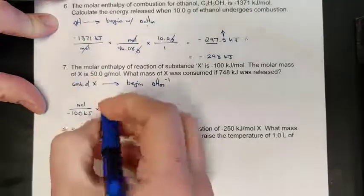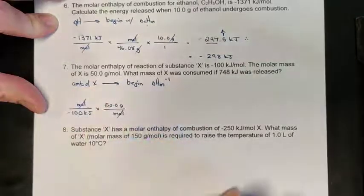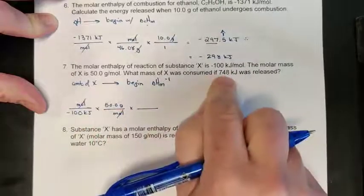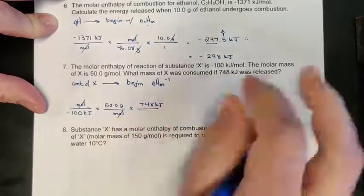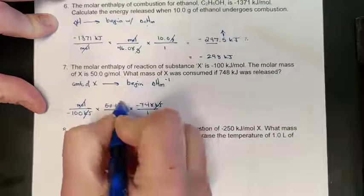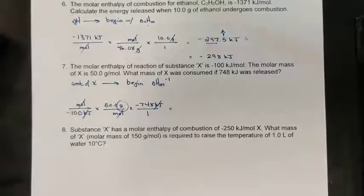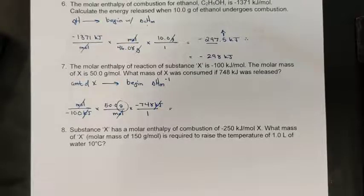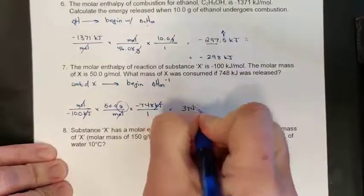Starting with the reciprocal: 1 mole per negative 100 kJ. To convert moles to grams, I multiply by the molar mass: 50.0 g/mol, cancelling moles, leaving g/kJ. We're told 748 kJ was released — those are negative values — so I multiply by negative 748 kJ. Kilojoules cancel, leaving grams. Running factor-label: 50 × (−748) ÷ (−100) = 374 grams.